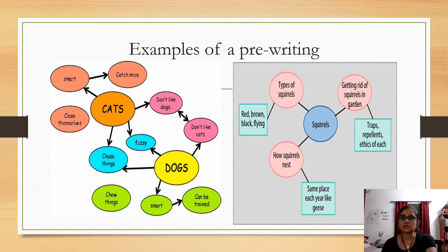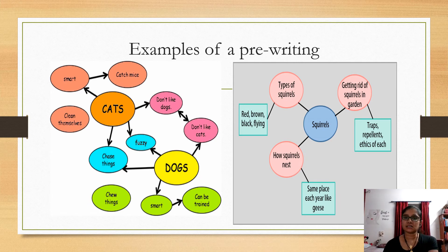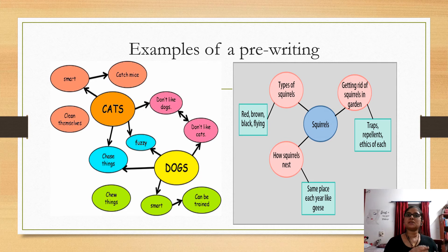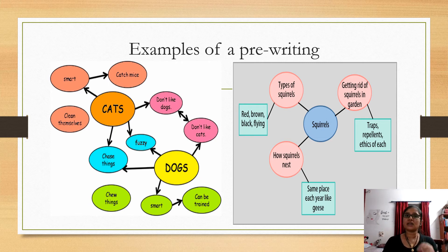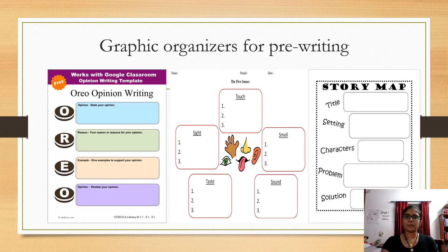In the next picture, the topic is squirrels. The child has organized it into types of squirrels — red, brown, black, and flying — how to get rid of squirrels in the garden using traps and repellents, and how squirrels nest in the same place each year, like geese. The child has supported details with examples. This is one way to pre-write, but putting circles and squares is not the only method — it depends on the genre of writing.